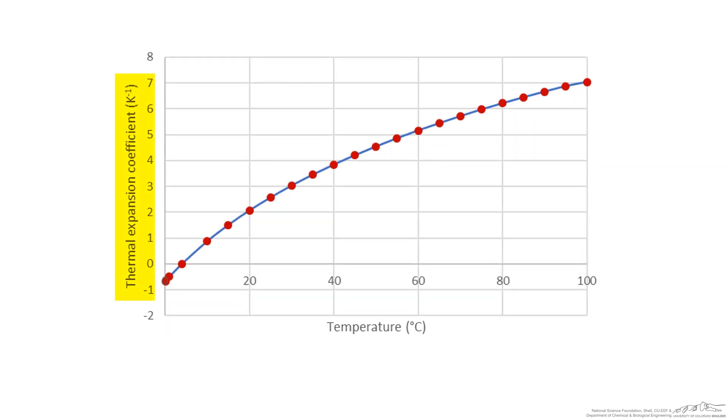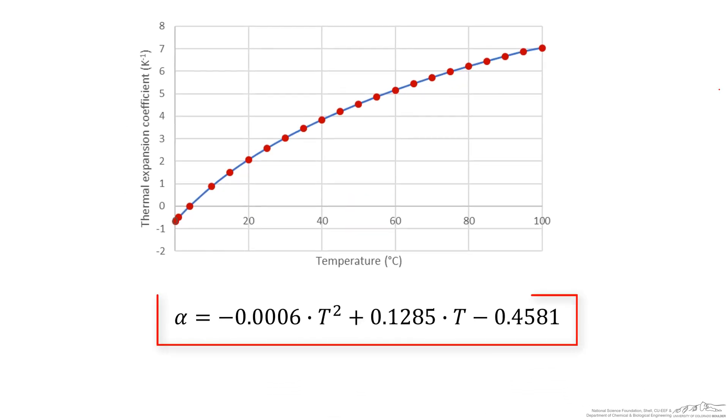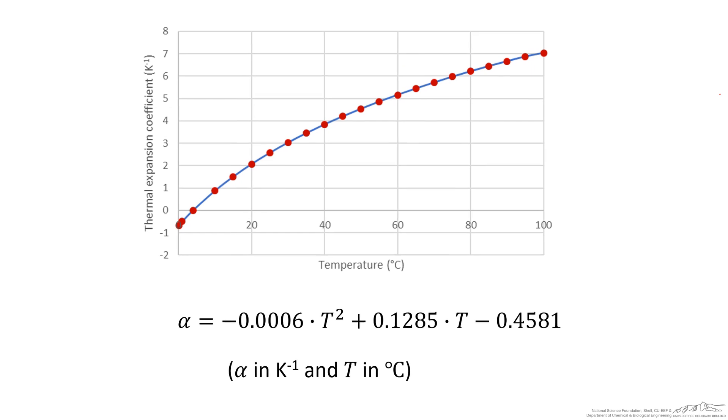Another example is the thermal expansion coefficient of water. The scientist collects data shown in red and fits a second-order polynomial model. The important thing here is that thermal expansion is in per Kelvin and temperature is in degrees Celsius. In this model equation, temperature must be in Celsius and the output is per Kelvin.